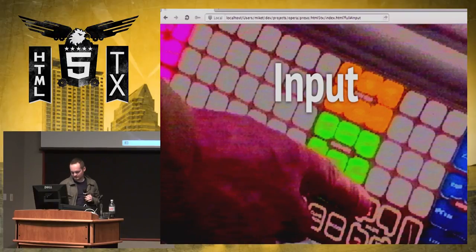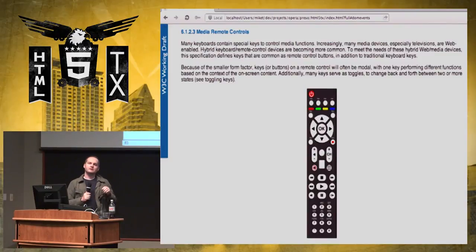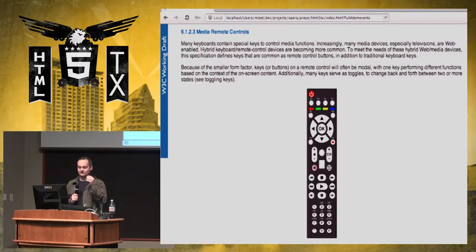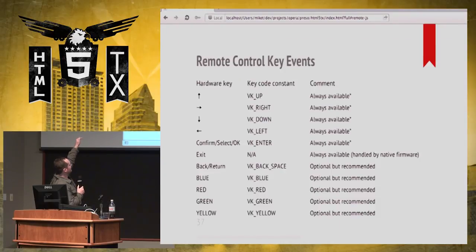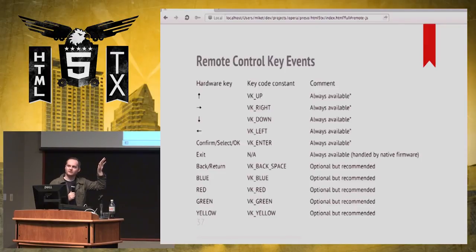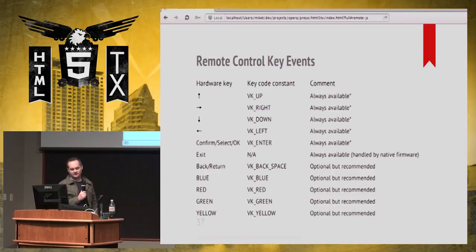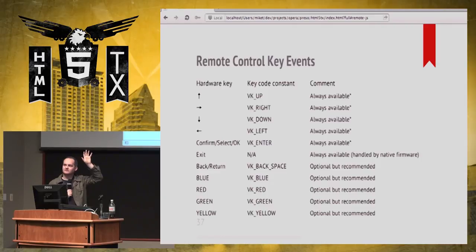Remote control is awkward and weird, but there are ways defined by the W3C to have special events you can listen for — special key constants that are defined. You have VK_UP, VK_RIGHT, VK_DOWN, VK_LEFT, and so on — VK standing for virtual key. You can listen for these and inspect the key event, and say: if VK_UP was pushed, move your player up. You're guaranteed to have five of these; all TV remotes will have up, down, left, right, and enter.